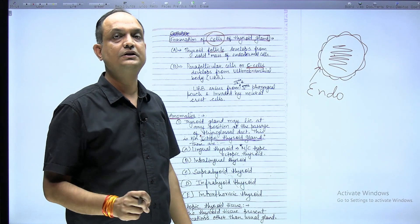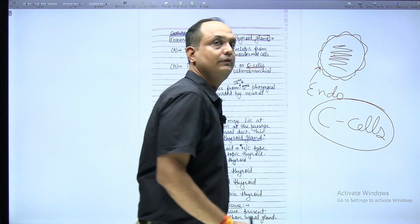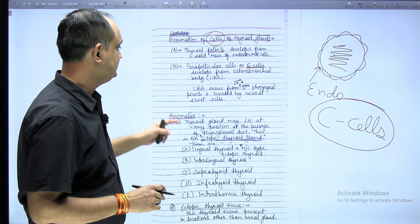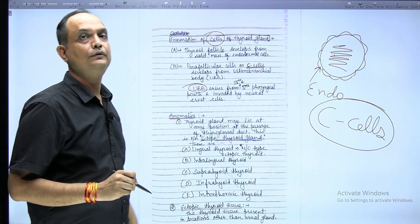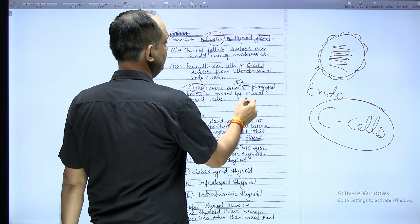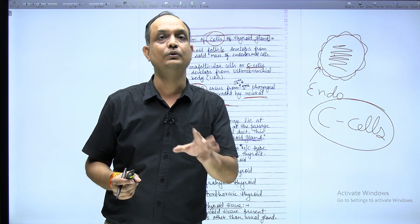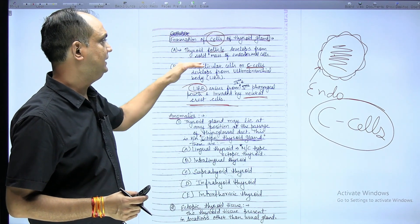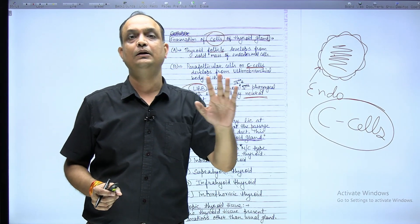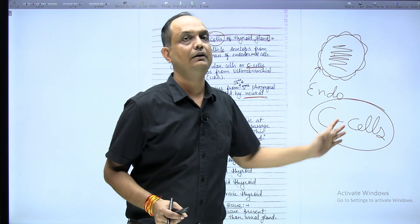There is a very special kind of cells present in the thyroid gland known as C cells or parafollicular cells. These C cells or parafollicular cells develop from the ultimobranchial body. You have to keep in mind that these ultimobranchial bodies arise from the endoderm of the fourth and fifth arches and are later invaded by the neural crest cells. The neural crest cells are basically responsible for forming these parafollicular cells or C cells, which are responsible for maintaining calcium homeostasis in an individual.